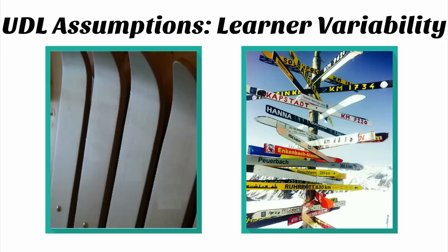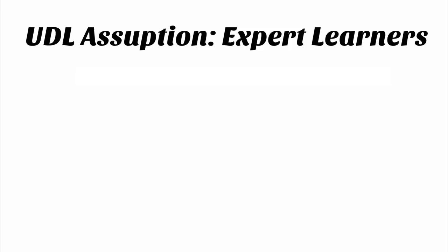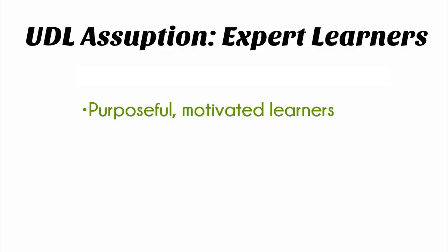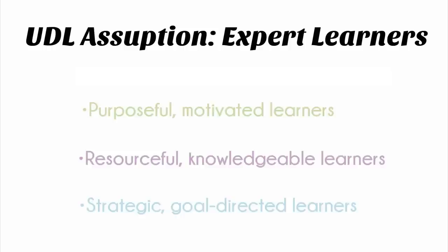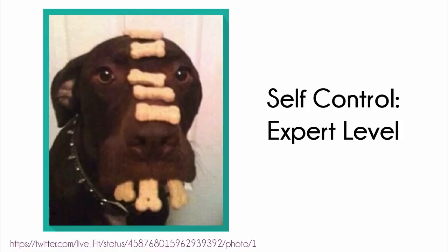Universal Design for Learning also makes the assumption that the purpose of education is to develop expert learners. UDL asserts that expert learners are purposeful and motivated learners, resourceful and knowledgeable learners, and strategic, goal-directed learners. Just like this dog is an expert at self-control, patiently waiting, the goal of UDL is for every learner to develop expert skills in learning. Imagine if we let students know about these goals and then design learning to help them reach these goals. Powerful stuff.